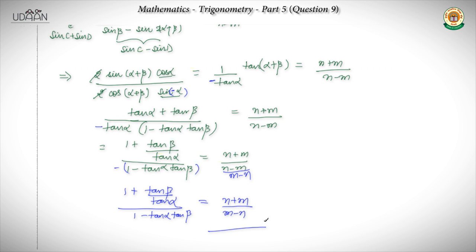So finally the thing is proven. The important thing is to be careful with the plus/minus sign, especially when we have the sin C minus sin D formula. Since it was given in n/m form and the requirement was in m plus n and m minus n form, the first thing to strike is componendo and dividendo. After that, we have a little simplification and we have the final answer. That was question number 9.